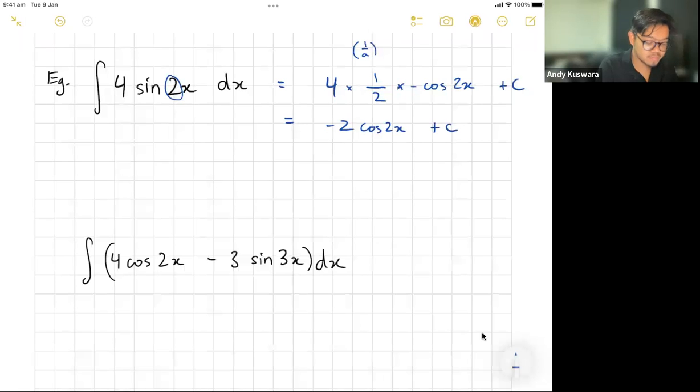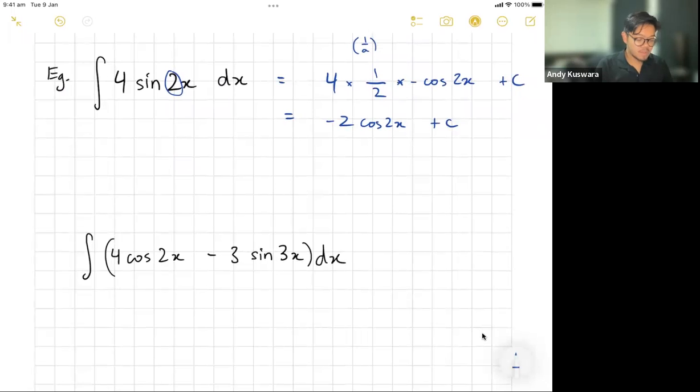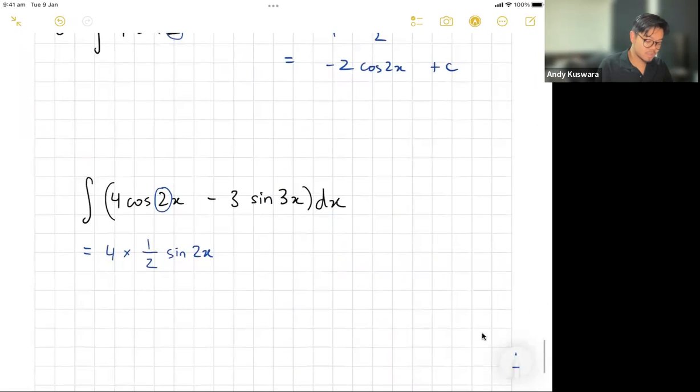Okay, now for the next one. Here if we've got multiple terms, let's just deal with them in the same way, just a little bit more practice. In this case here, cos will integrate to sine, so that means it'll be 4 times 1 over 2 because there's the 2 there, becomes sine 2x. And we know that sine is going to integrate to positive cos, so it's going to be plus.